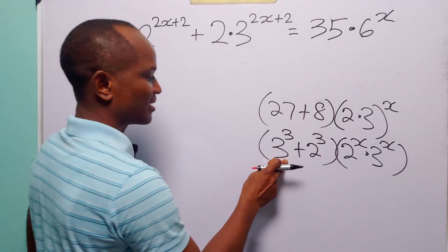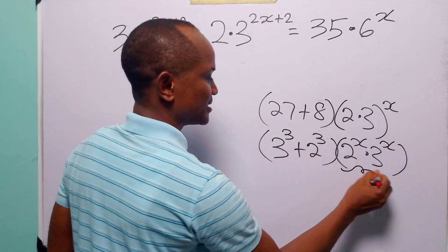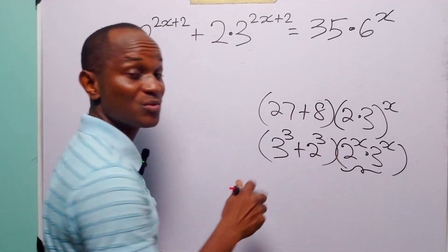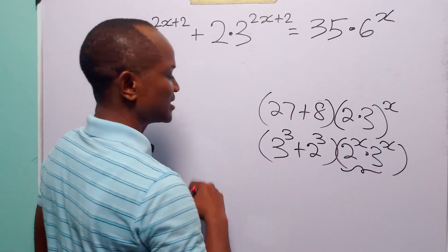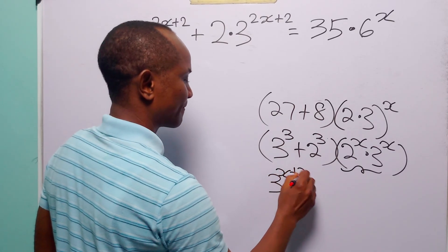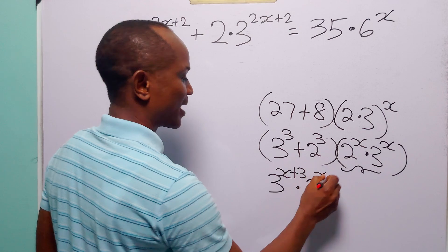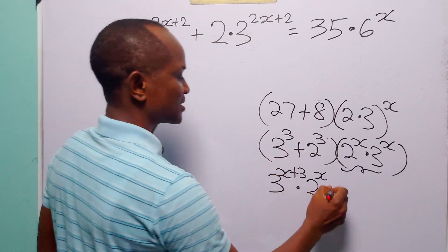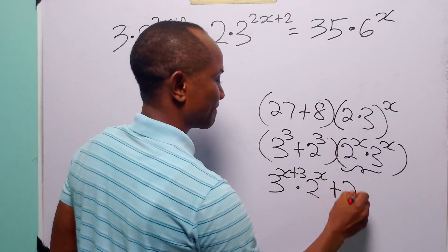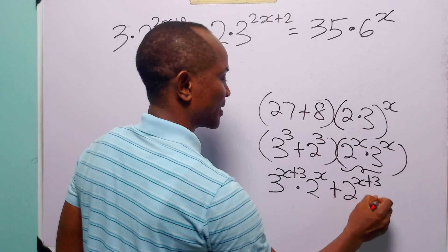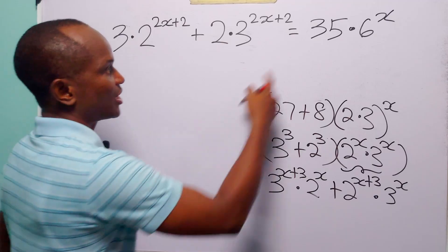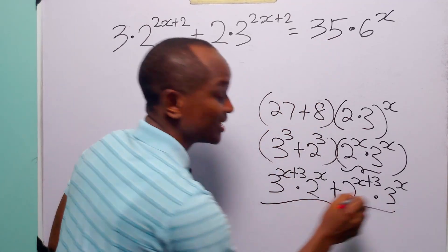When we multiply these two items we have 3 to the power 3 times these two. Remember that when we multiply two numbers with the same base we simply add their exponents, so this gives 3 to the power x plus 3, multiplied by 2 to the power x. The same happens for the other term: we have 2 to the power x plus 3 multiplied by 3 to the power x.